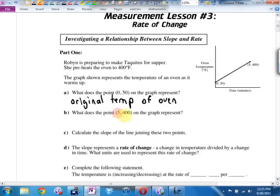What does (5,400) represent? Okay. Final temp, 400 degrees. And how long did it take to get that hot? Five minutes. Clearly a newer oven, mine takes 15, drives me crazy.